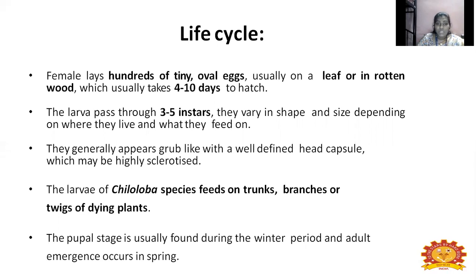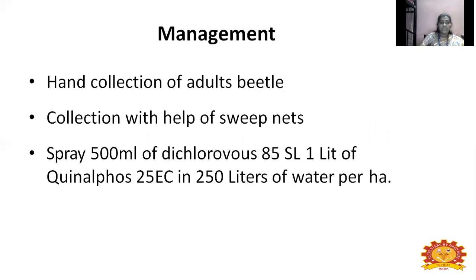The larva of Chiloba species feeds on trunks, branches, or twigs of dry plants during larval stage, while the adult feeds on the flowers or blossoms of maize. The pupal stage is usually found in winter, and adult emergence occurs in spring. Management: hand collection of adult beetles using sweep nets. Chemically, spray 500 ml of dichlorvos 85 SL in 1 liter of water, or quinalphos 25 EC in 50 liters of water per hectare.